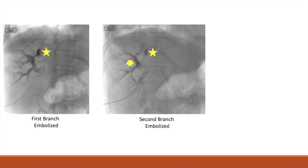In this slide, we can see the reverse curve catheter in position and embolic coils in both the first target portal vein (represented by the star) and the second target portal vein (represented by the plus). Note that the third portal vein branch to be embolized — the one that was accessed initially — has not yet been embolized.